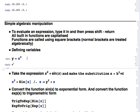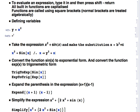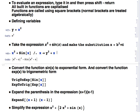Now we take the expression x squared plus sine x and make the substitution x equals b squared plus c. The slash-dot operator means 'make a substitution,' and the arrow expression specifies what x becomes. So evaluating this takes the first part and substitutes x equals y squared plus z, and we get our symbolic expression for what that looks like.